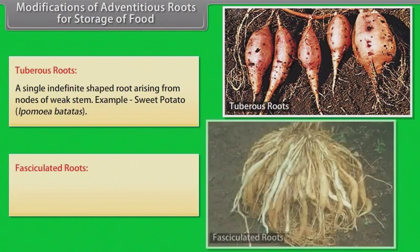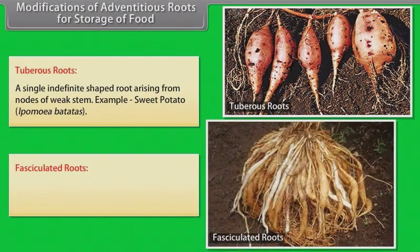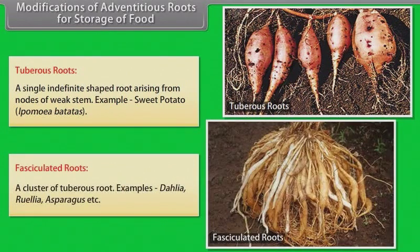Fasciculated roots: A cluster of tuberous roots. Examples: dahlia, zinnia, asparagus, etc.